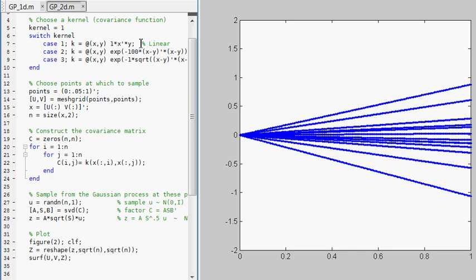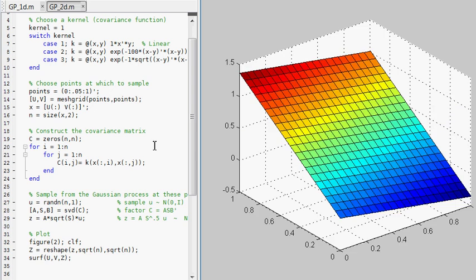And so here I have this, I called it the linear kernel. And I just have a 1 here so I can change the scale. And let's run this and see what we get. It takes a little longer because it's a larger matrix that we're working with.